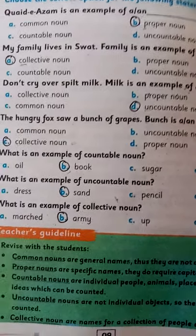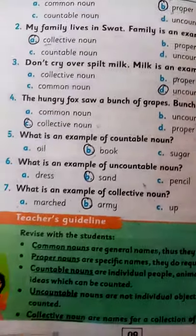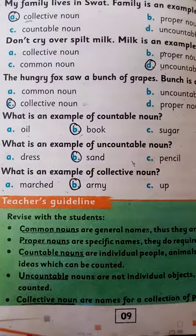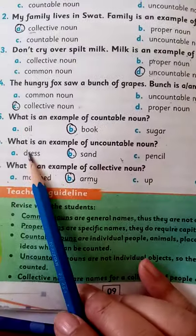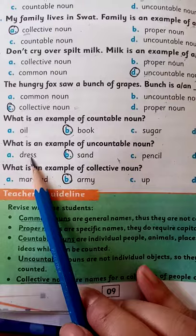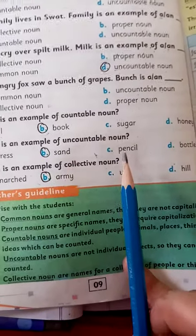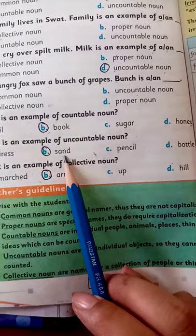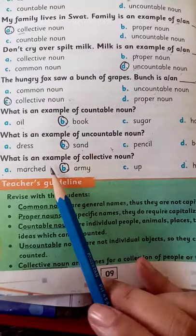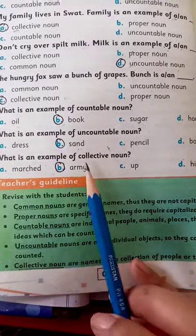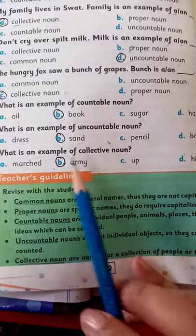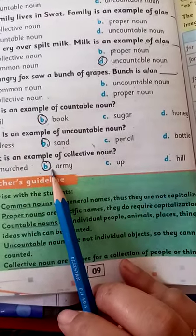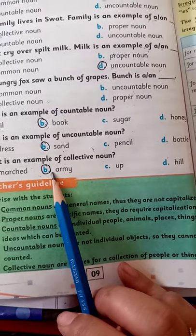Number six: what is an example of an uncountable noun? Option A is dress and pencil bottle, which we cannot count. Option B is the correct answer. Number seven: what is an example of a collective noun? Among the options, 'army' is the correct example of a collective noun.